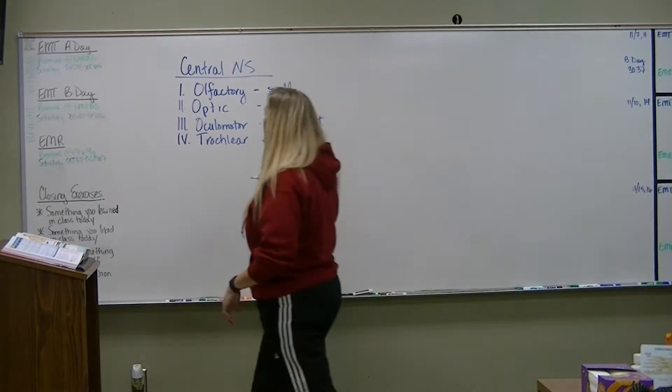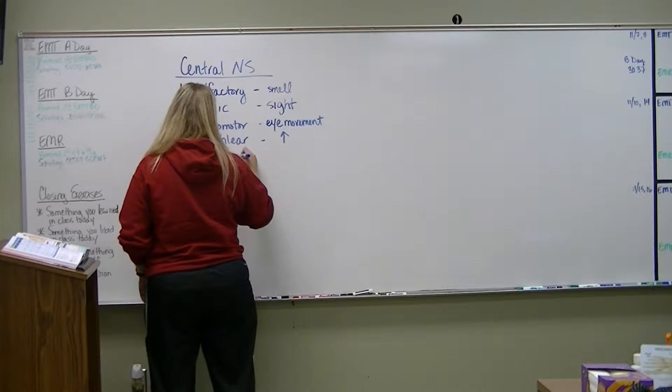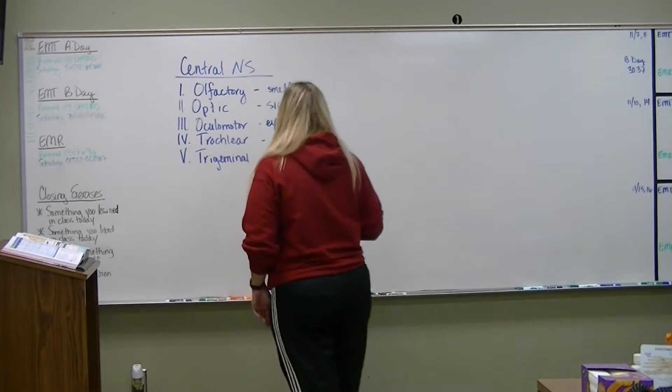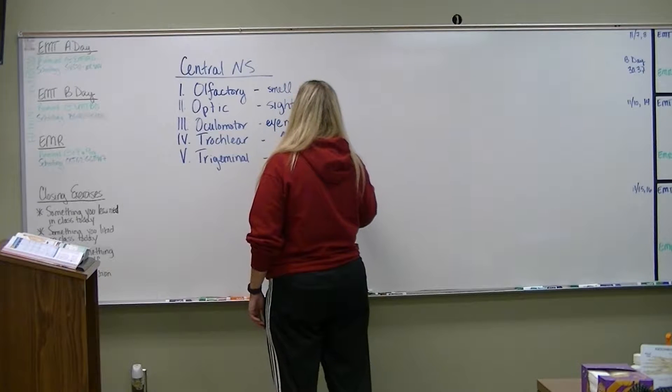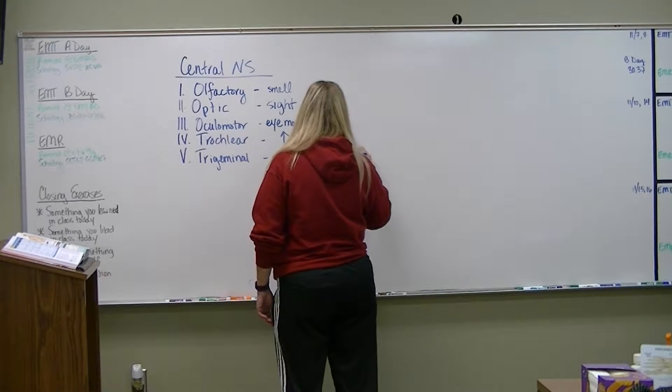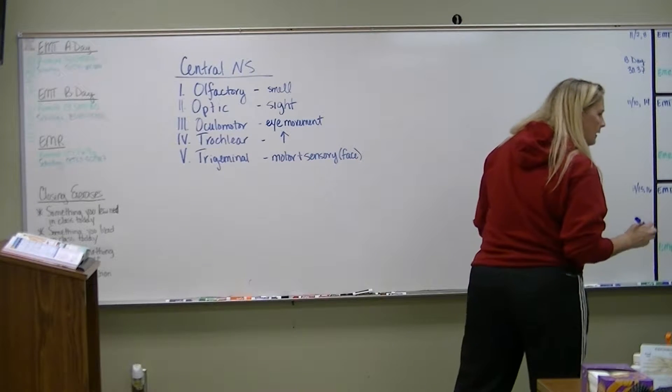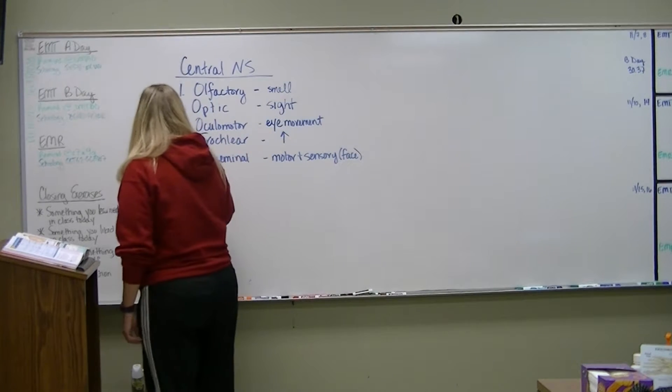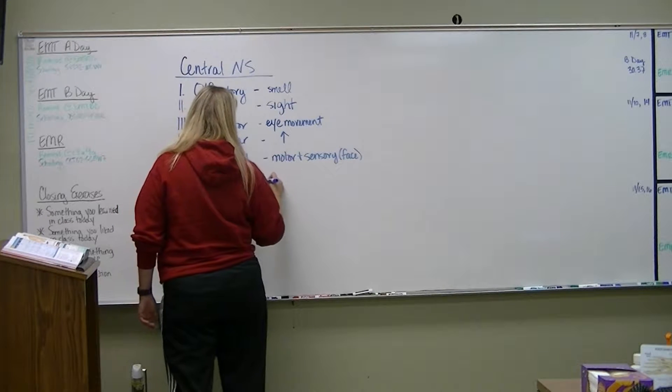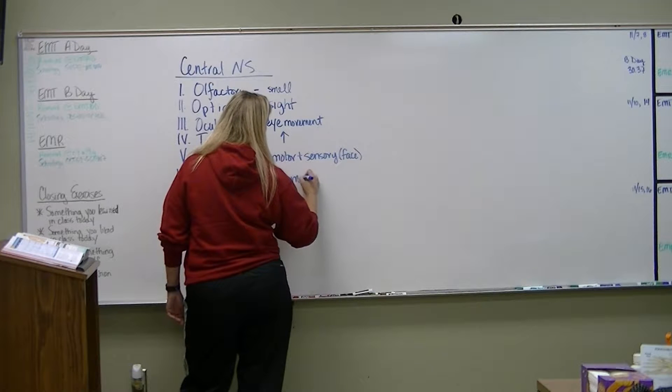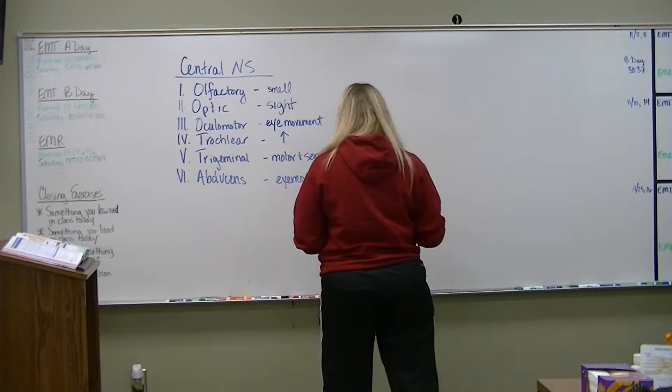Then we have the trigeminal. This is responsible for motor and sensory in your face. And then the abducens. This one is also responsible for eye movement. So that is six of them.